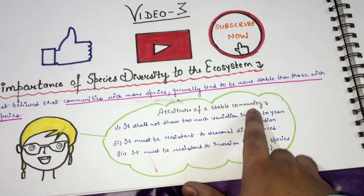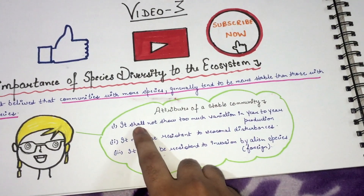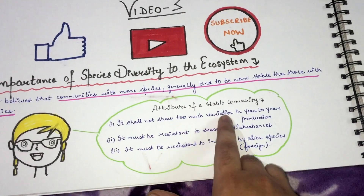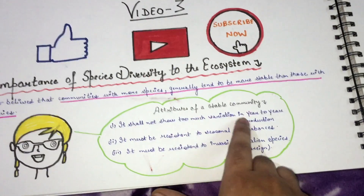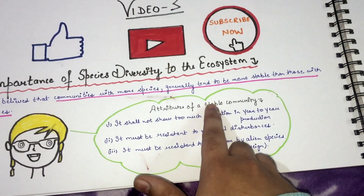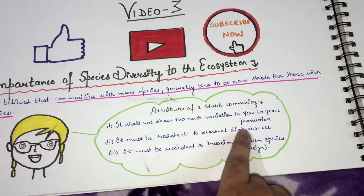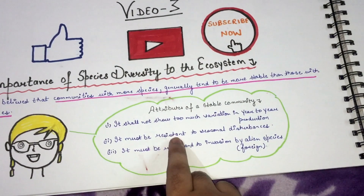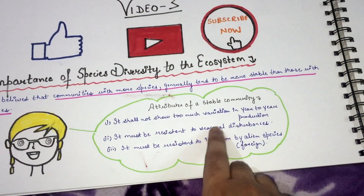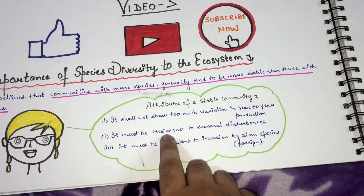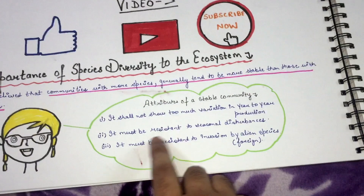What are the attributes of a stable community? Number one: it should not show too much variation in year-to-year production. Number two: it must be resilient to seasonal disturbances — it must be both resistant and resilient to seasonal disturbances.